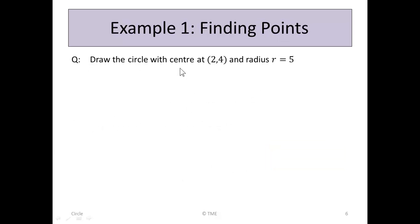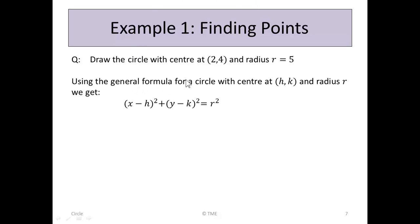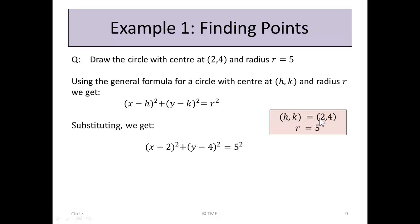Example 1: you're asked to draw the circle with centre at 2, 4 and radius r equals 5. How do you find the points on the circle algebraically? We use the general formula for a circle with centre h, k and radius r. The equation is x minus h squared plus y minus k squared is r squared. We know h, k is 2, 4 and r is 5. Substituting, the equation is x minus 2 squared plus y minus 4 squared is 5 squared.